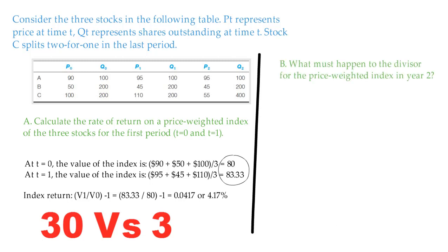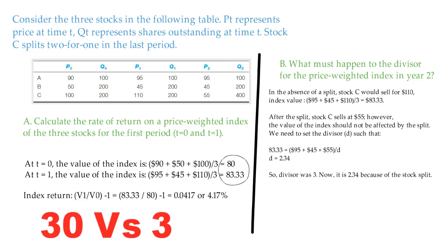Second, what must happen to the divisor for the price-weighted index in year number 2? In the absence of stock split, stock C would sell for 110, and the value of the index would be the average price of the individual stocks included in the index, which is 95 plus 45 plus 110 divided by 3 equals 83.33.